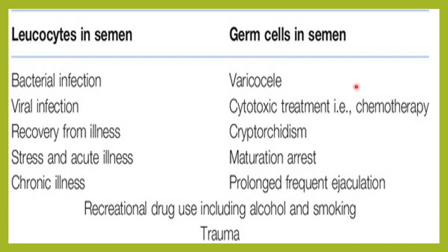Other causes of germ cells in the semen include varicocele, chemotherapy or cytotoxic treatment, cryptorchidism (wherein the testes are not developed or are hidden), maturation arrest, prolonged frequent ejaculation, drug abuse, increased smoking, increased alcohol consumption, and trauma. All these can lead to increased germ cells in the semen.